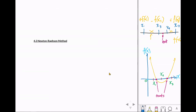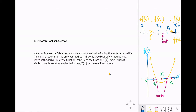So what is the NR method? It is a widely known method for finding roots because it is simpler and faster than the previous methods. The only drawback of the NR method is its usage of the derivative function f prime of x and the function itself. Thus, NR method is only useful when the derivative f prime of x can be readily computed.